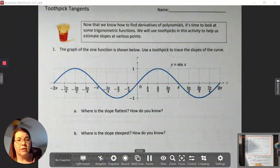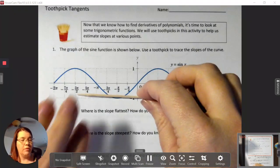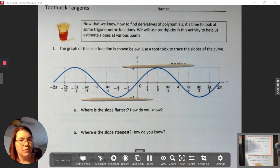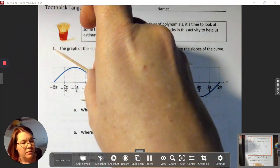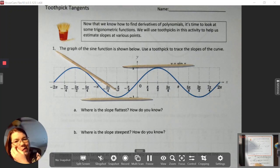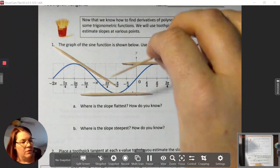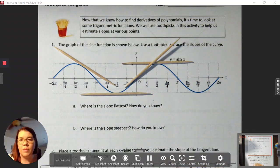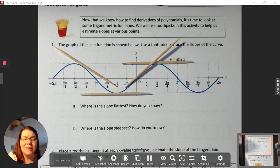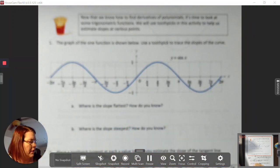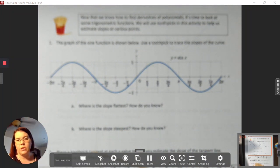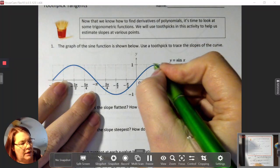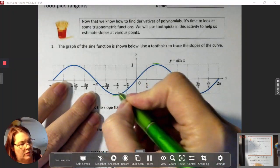The graph of the sine function is shown below. I'll use toothpicks to trace the slopes of the curve. We can see right here the slope is zero, and here the slope is also zero. There's a slope that's negative, the slope over here is positive. We're using the toothpicks as tangent lines for us.